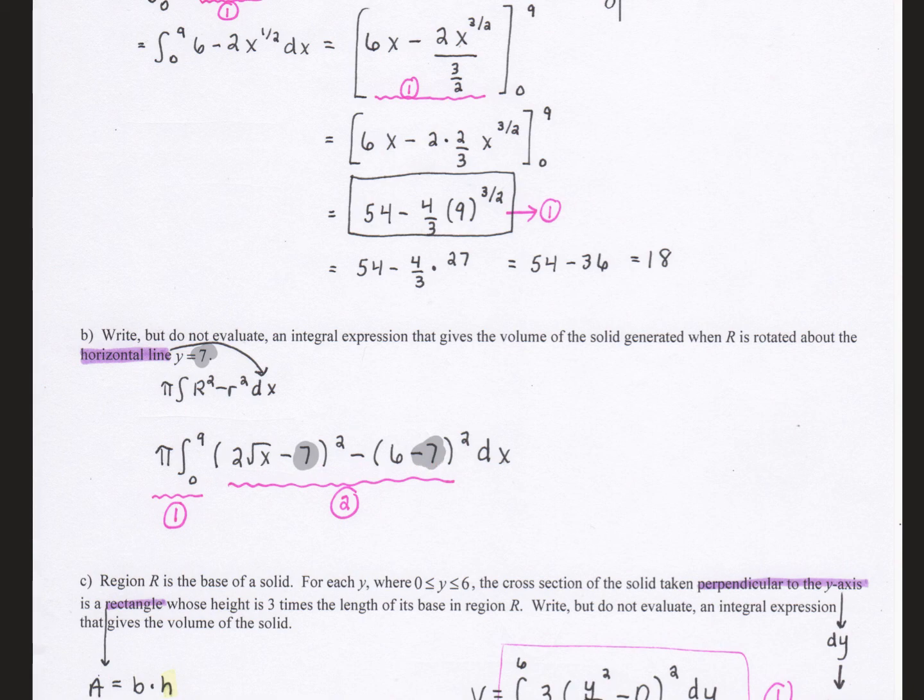It would be equally correct if within each of these binomials, you switched around the terms. This first one you could say 7 minus 2 square root of x, and then the second one you could say 7 minus 6. You earn one point for the constant, which is pi, and the limits 0 to 9. And then two points for the correct integrand. If you did something like you forgot to square it, you might get one of the two points. Or if you interchange the two binomials, you might get one of the two points. Or if you forgot to subtract the 7 from each of those, then you could earn one out of two points.